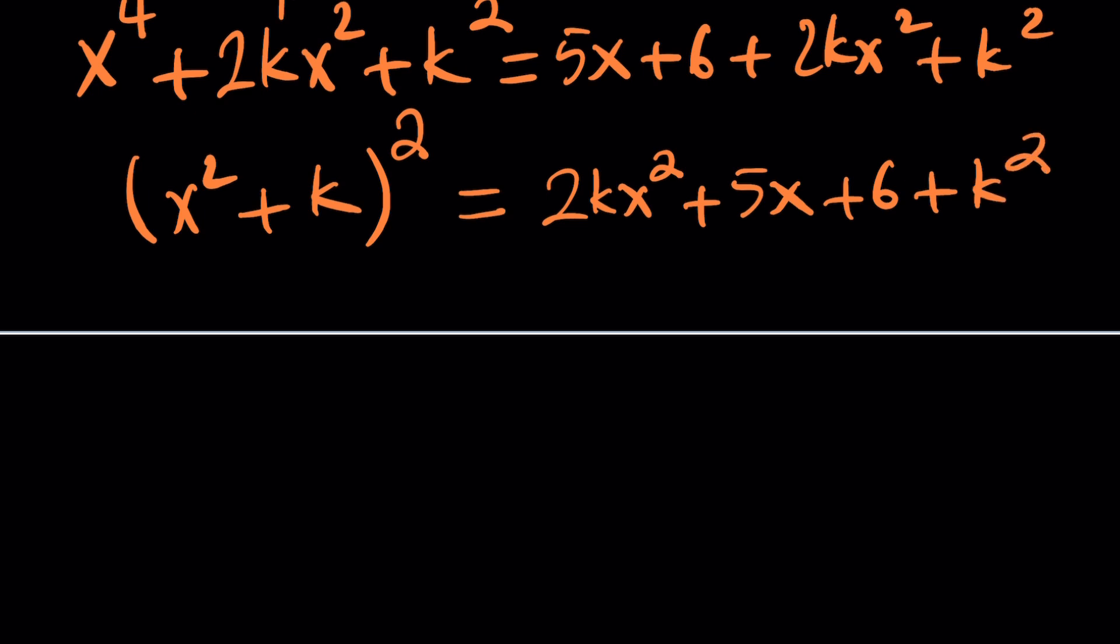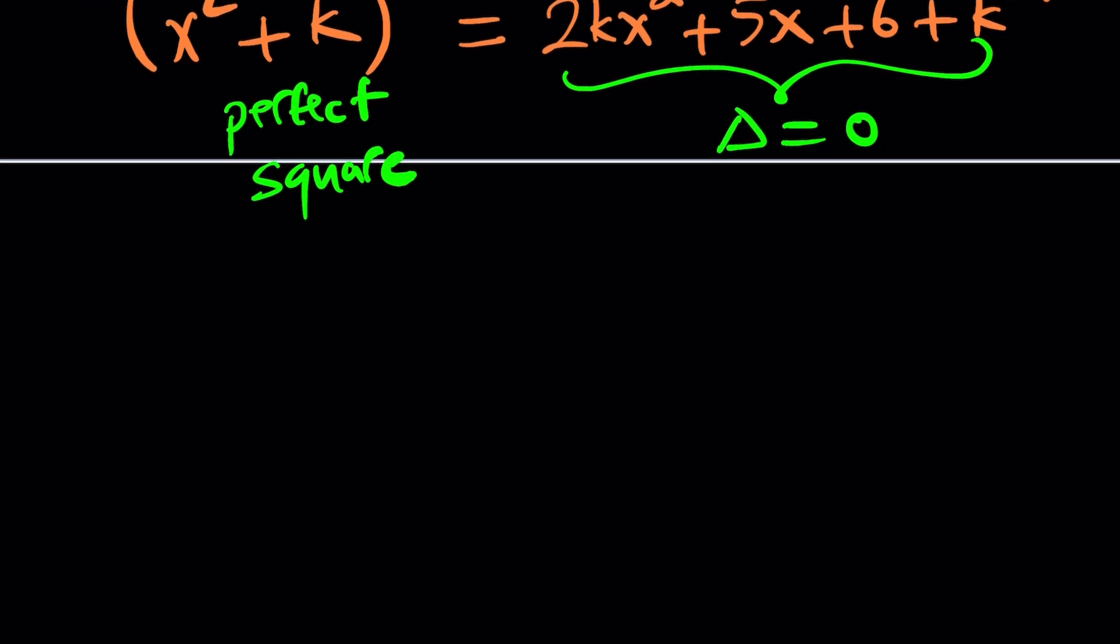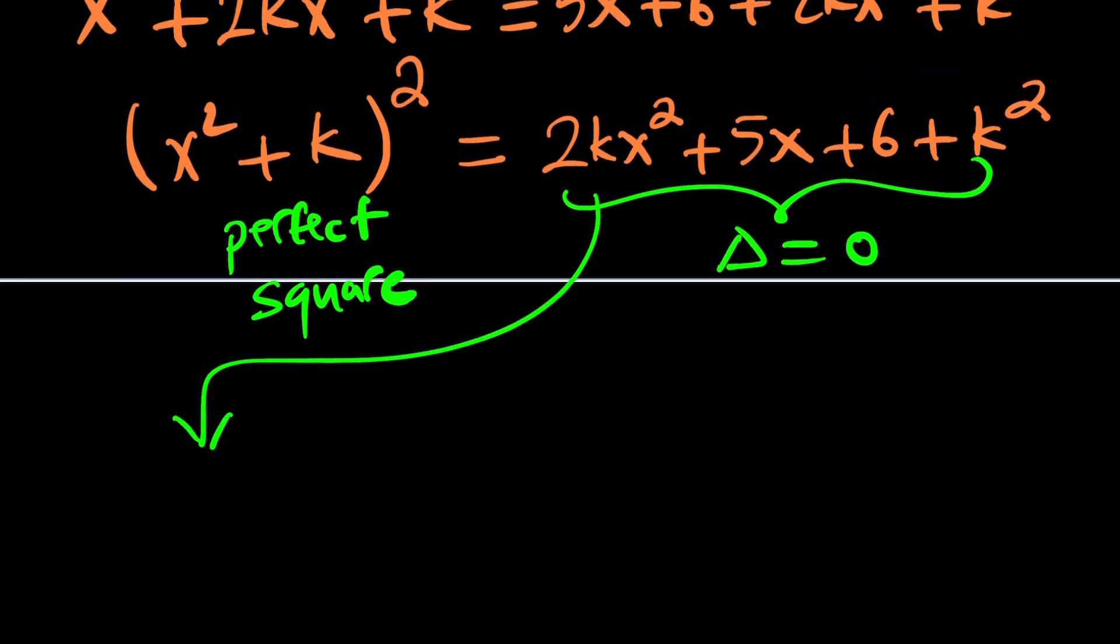How do we make sure that the right hand side is a perfect square? Well, it's quadratic. In order for this to be, since this is a perfect square, in order for the right hand side to be a perfect square, the discriminant needs to be 0. Remember the quadratic equation whose graph is a parabola? If the parabola is tangent to the x-axis, that means there's only one solution, or there's double solution, or it means the discriminant is 0. Or you get a perfect square, like this. So let's go ahead and take a look at the delta or the discriminant of this quadratic.